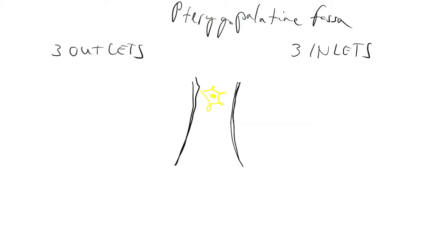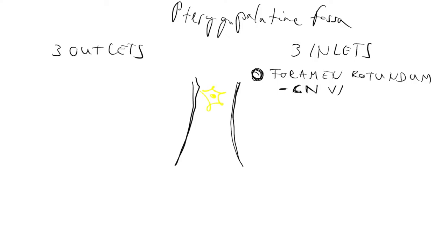Starting with the inlets: the first is here, which is a connection between the middle cranial fossa and the Pterygopalatine fossa — this is the foramen rotundum. And inside the foramen rotundum you find the second branch of the fifth cranial nerve, the maxillary nerve.